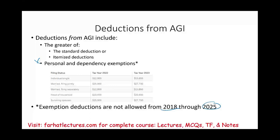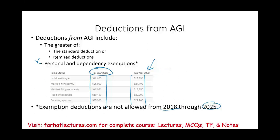For the standard deduction, every year is different. For tax year 2022 these are the amounts; for tax year 2023 these are different amounts. Each year they increase them, so if you're watching this in 2024, 2025, or 2026, those numbers will change, but the concept remains the same.